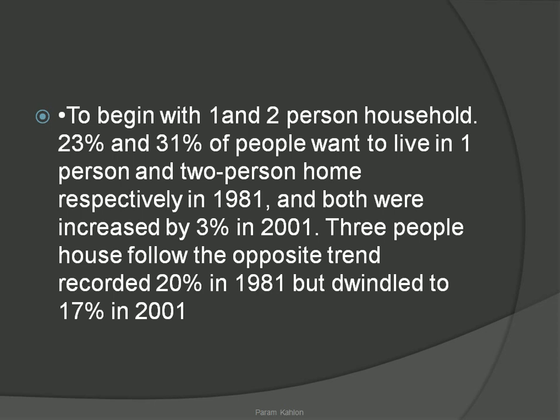Three people houses followed the opposite trend, meaning a decrease. 20 percent was recorded in 1981 but this dropped to 17 percent in 2001.